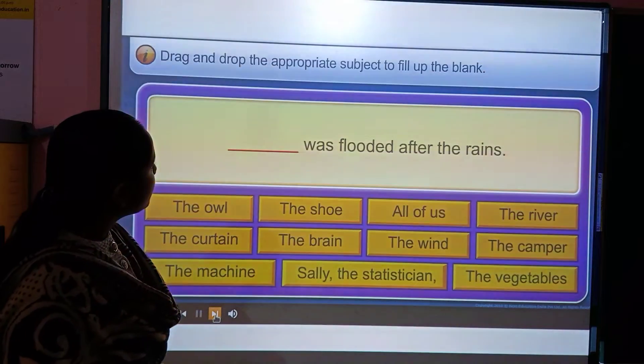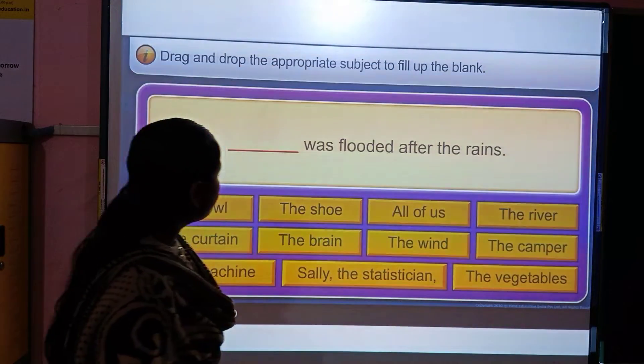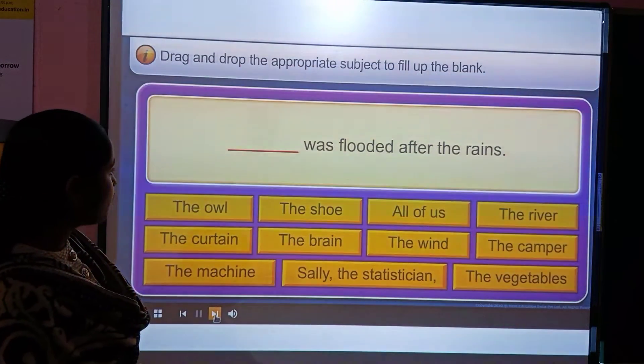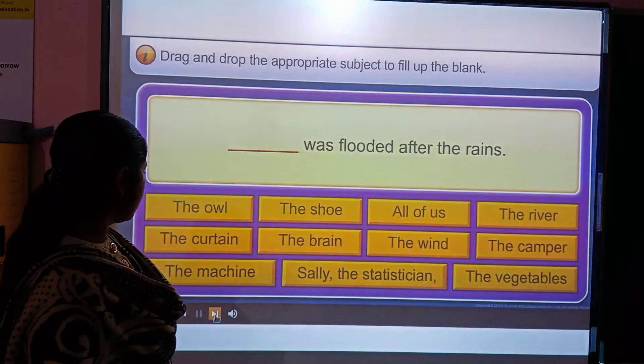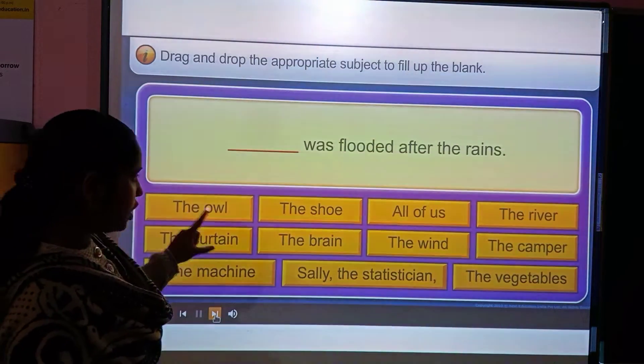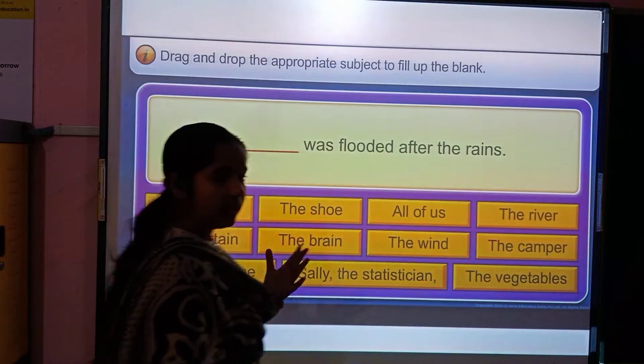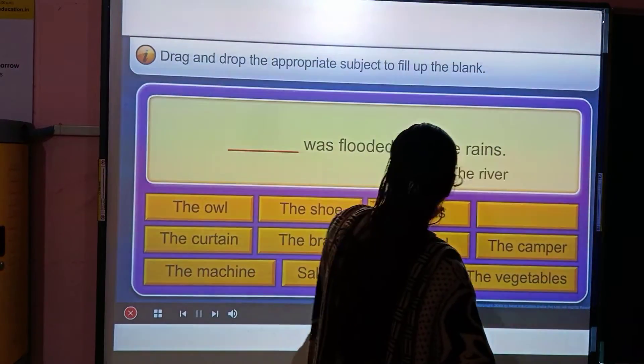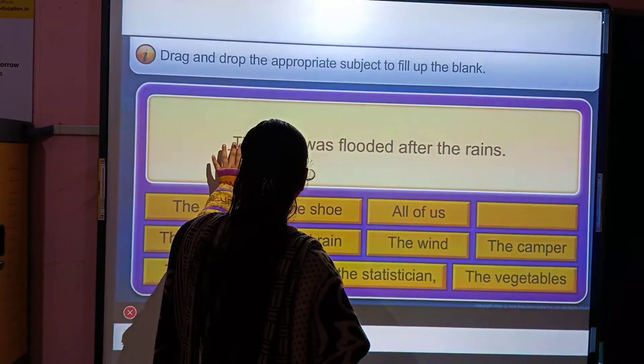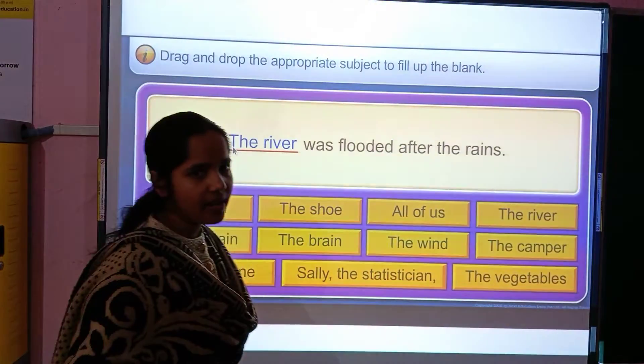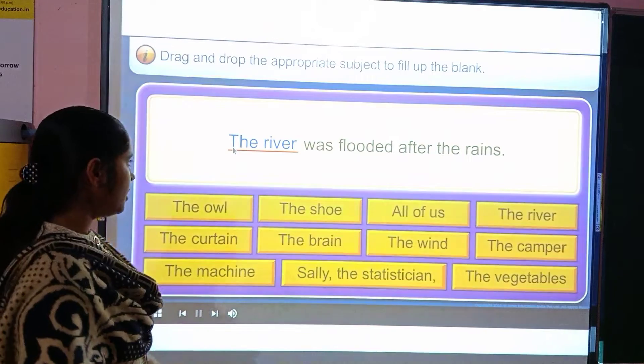Drag and drop the appropriate subject to fill up the blank. Dash was flooded after the race. The owl, the shoe, all of us, the river. The answer will be, I think, the river. Let's see. The river. Yes, it's the correct answer. The river.